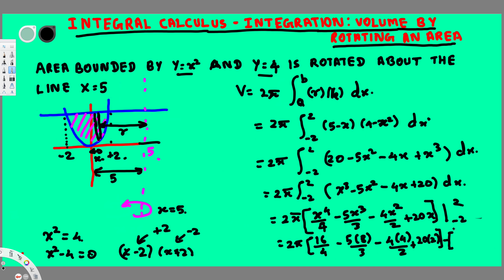Applying the lower limit x equals negative 2: negative 2 to the 4th power is positive 16 (even power), so 16/4; negative 2 cubed is negative 8 (odd power), so we get negative 8 times 5 divided by 3; negative 2 squared is positive 4, giving 4/2; and 20 times negative 2 equals negative 40.